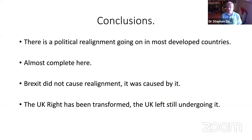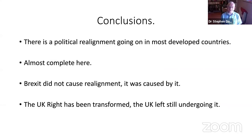These are the conclusions of the book: there's a political realignment going on in most developed countries — it's easier to list the countries where there isn't one, which is basically the Irish Republic, Portugal, and Japan. Here in the UK the realignment is almost complete; we've moved into a new political alignment and left behind an old one. Brexit did not cause the realignment — it was caused by it. The UK right has been transformed; it's quite different from what it was even three or four years ago. The UK left is still undergoing its own transformation, and that transformation is driven by fairly profound changes in social divisions and conflicts of interest within British society.